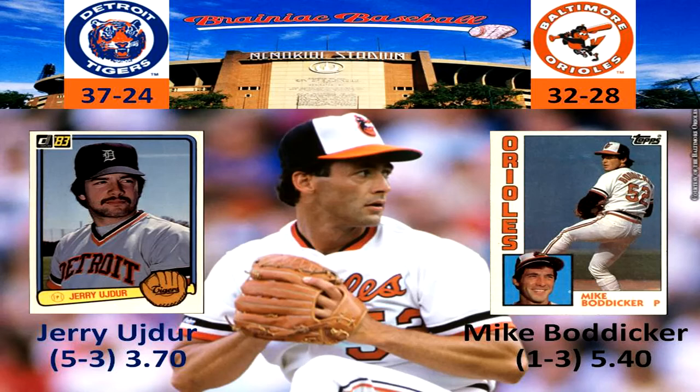Hey everybody, welcome back to Brainiac Baseball's 1982 Detroit Tigers season replay. Today's matchup is between the Detroit Tigers and the Baltimore Orioles at Memorial Stadium. On the mound for Detroit is Jerry Uger, whose record is 5-3 with a 3.75 ERA. And pitching for the Orioles today is Mike Boddicker, whose record is 1-3 with a 5.40 ERA.